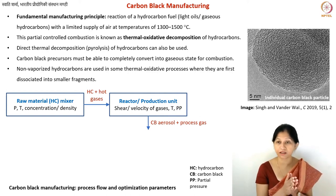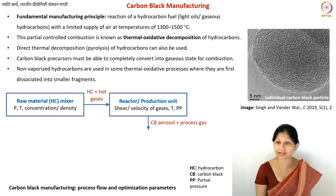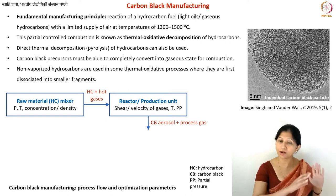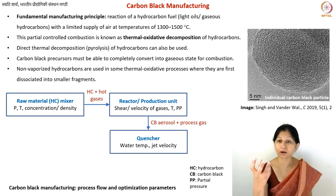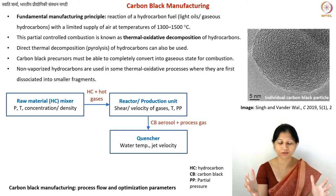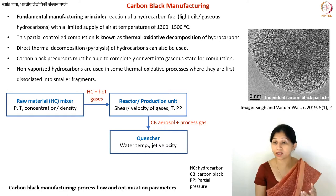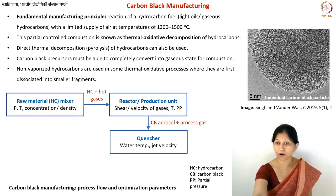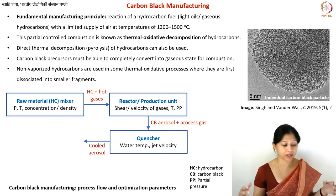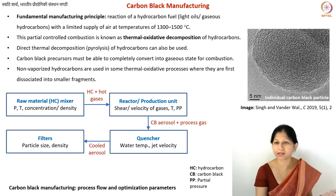The aerosol also contains process gas including carbon dioxide and carbon monoxide. This hot process gas and carbon black aerosol then needs to be quenched. With quenching, you stop the process — no further burning takes place after that. You typically have a water-cooled chamber for quenching. The optimization parameters there are the temperature of the chamber, temperature of the water, and the velocity of water jets. After quenching, you have cooled carbon black aerosol, which goes into filters of various types.